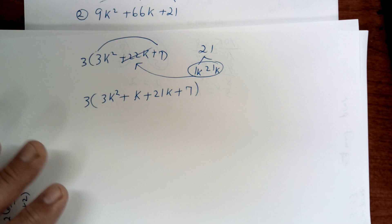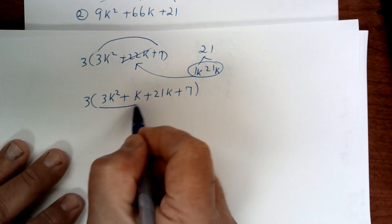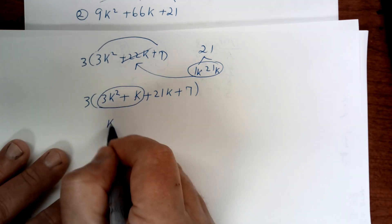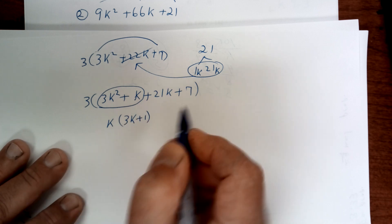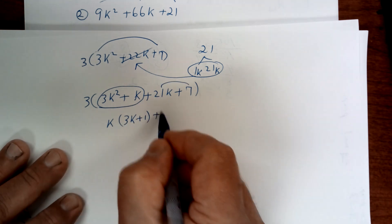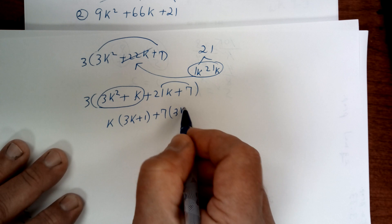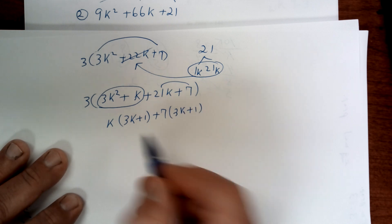Once you get to this point, you're going to take out a k, so you're left with k(3k + 1). Here you're going to take out a 7 and you're left with 3k + 1. Then you're going to take out 3k + 1.